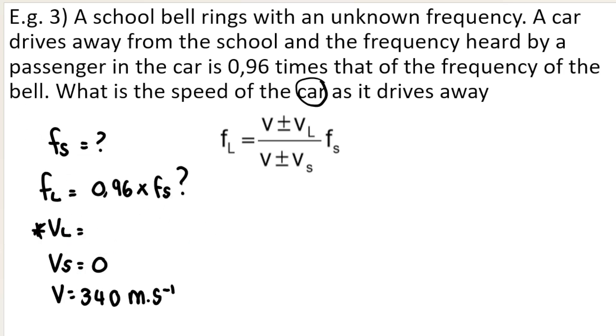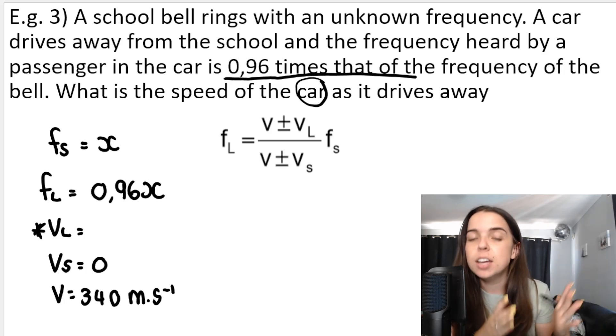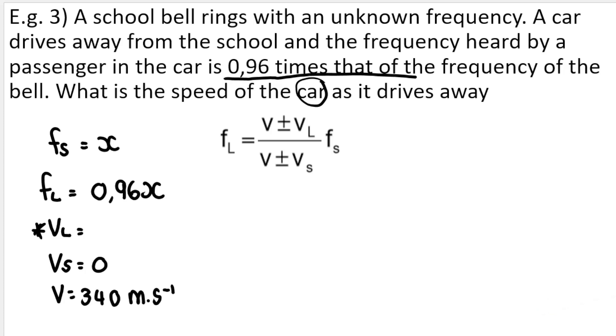Now, what I say to my learners is take something as X. So it says, the school bell rings with an unknown frequency. So the school bell is the source. It rings with an unknown frequency. And let's call it X. A car drives away from the school and the frequency heard by a passenger in the car, so the car and the passenger in the car is the listener. It's 0.96 times that of the frequency of the bell. So 0.96 multiplied by X. It's basically what the listener hears is a percentage, is 96% of what the bell is producing. It's not hearing 100% of what the bell is producing because there's movement. It's hearing 0.96 times that. We want to know the speed of the car as it drives away, so the velocity of the listener.